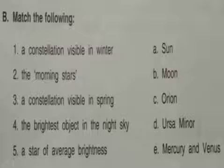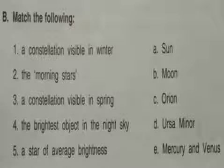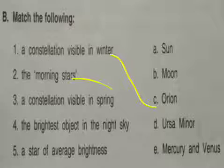B. Match the following. First: A constellation visible in winter — the correct pair is Orion. Orion is a constellation which is visible in winter. Second: Morning stars — morning stars are Mercury and Venus.